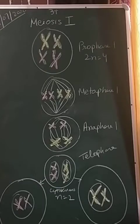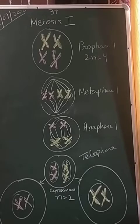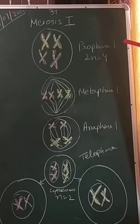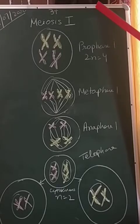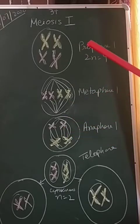Good afternoon dear students. As we know, we are studying about cell cycle and cell division. We are proceeding with meiosis one — till now we have studied its first stage, that is prophase one, and in that I have told you about its five sub-phases: leptotene, zygotene, pachytene, diplotene, and diakinesis.